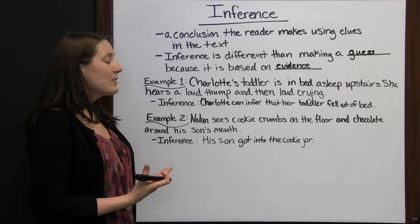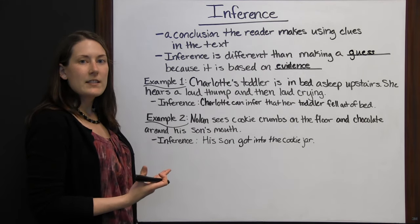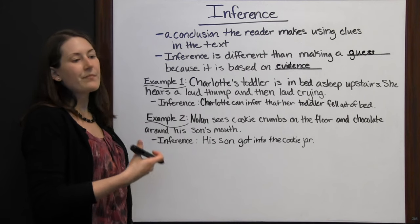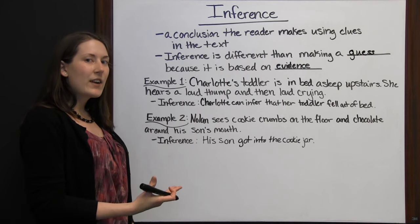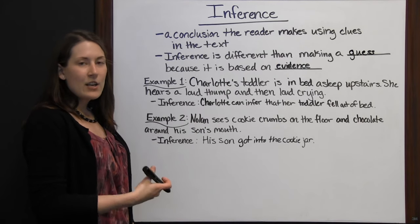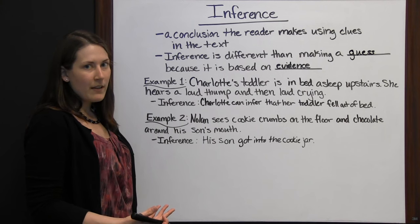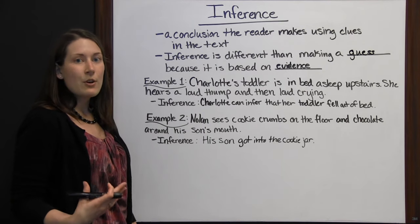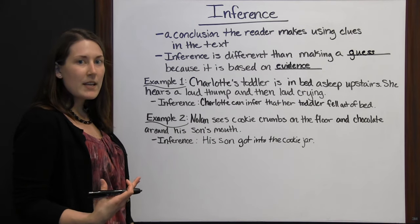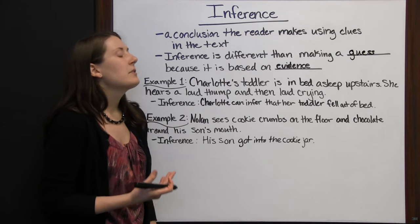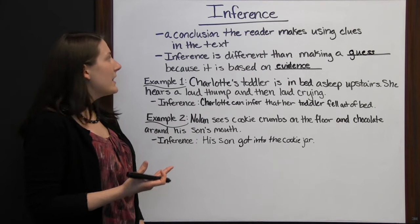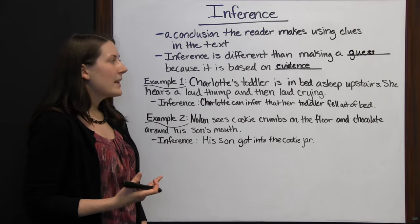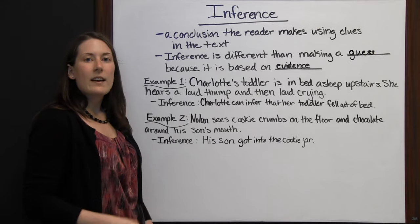Another example: Nolan sees cookie crumbs on the floor and chocolate around his son's mouth. Cookie crumbs and chocolate around the mouth tells you that Nolan's son got into the cookies somehow. You can infer he got into a cookie jar or pack of cookies without the author explicitly saying so. Some inferences are obvious common sense — if a lady comes into a store dripping wet and it's raining outside, you infer she doesn't have an umbrella. An inference is just a conclusion a reader makes based on evidence.